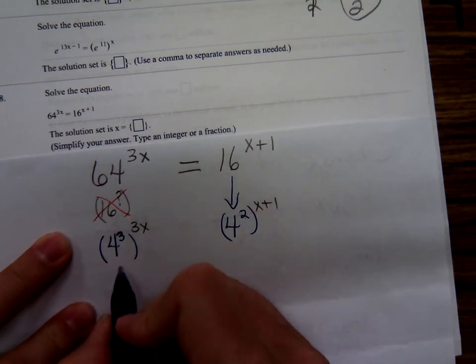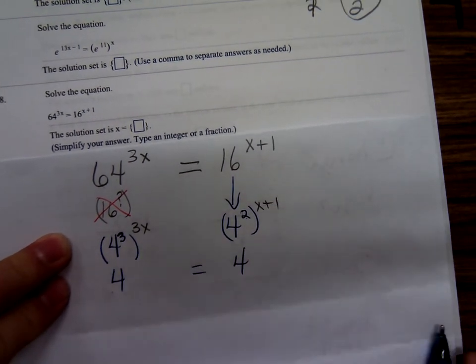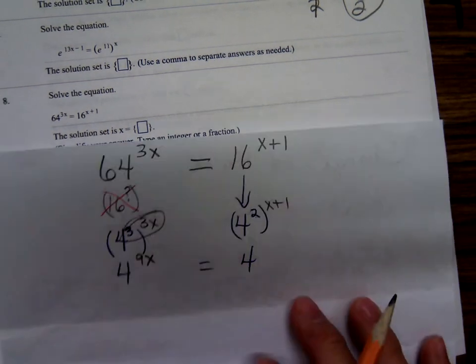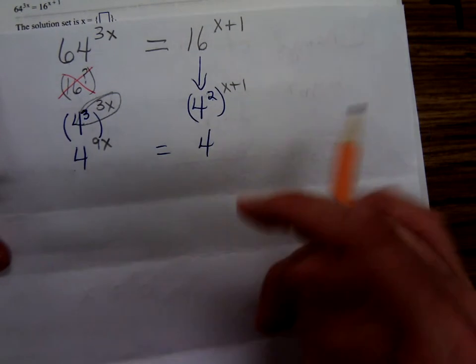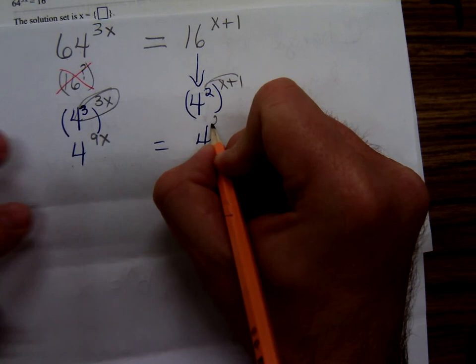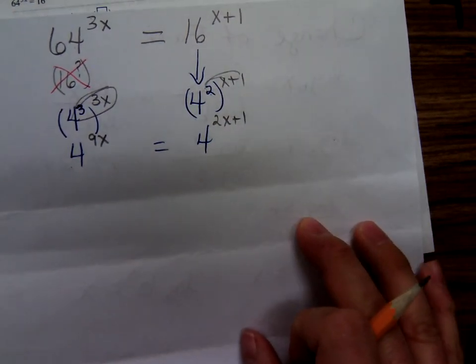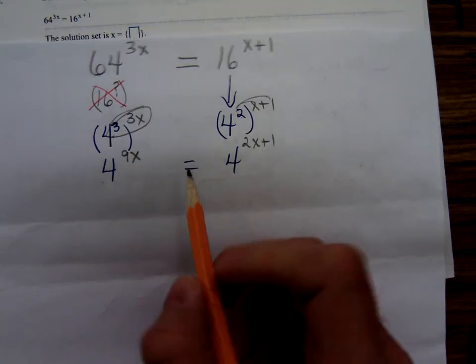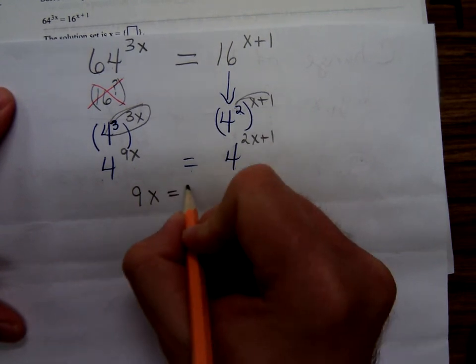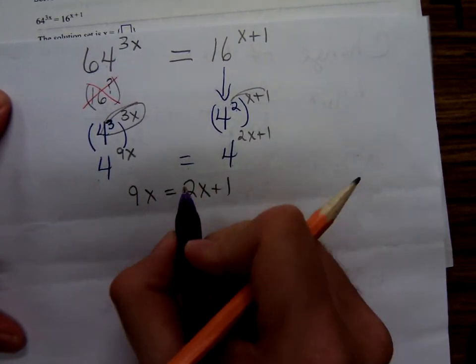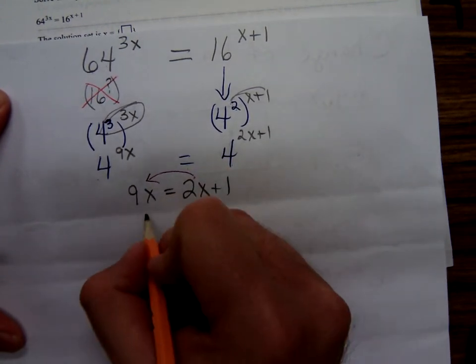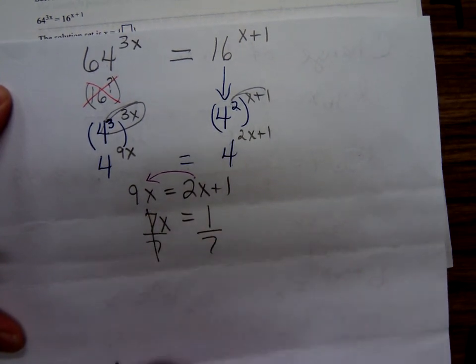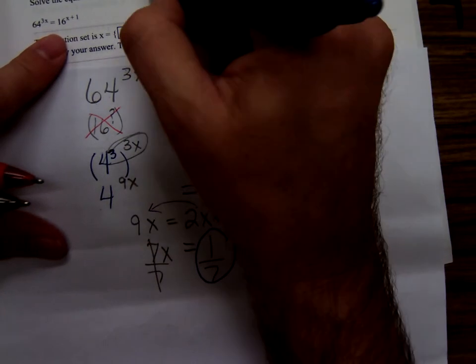Now, I'll write it with just one base of 4. You're going to have to multiply 3 times 3x, that's 9x. Over here, you distribute over addition. So when you're multiplying, you have to distribute that too. 2x plus 1. Once you have the same base, the exponents must be equal. So, 9x equals 2x plus 1. Subtract the 2x from both sides. That's 7x. So, 7x equals 1. Divide both sides by 7. 1 over 7 is our answer.